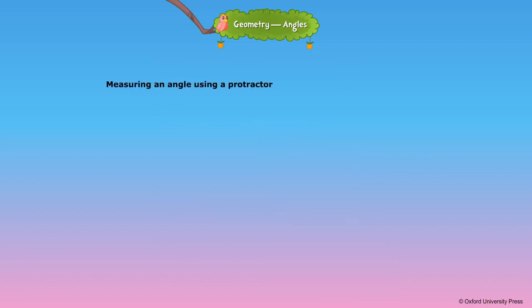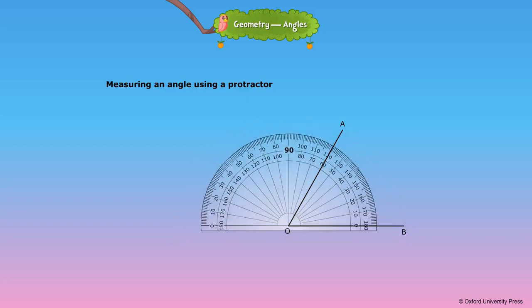Measuring an angle using a protractor. Step 1: To measure the given angle AOB, place the midpoint of the protractor over the vertex O of the angle. Step 2: Adjust the protractor without shifting the center from the vertex so that one arm of the angle is along the baseline. The baseline arm points at ray OA or OB.